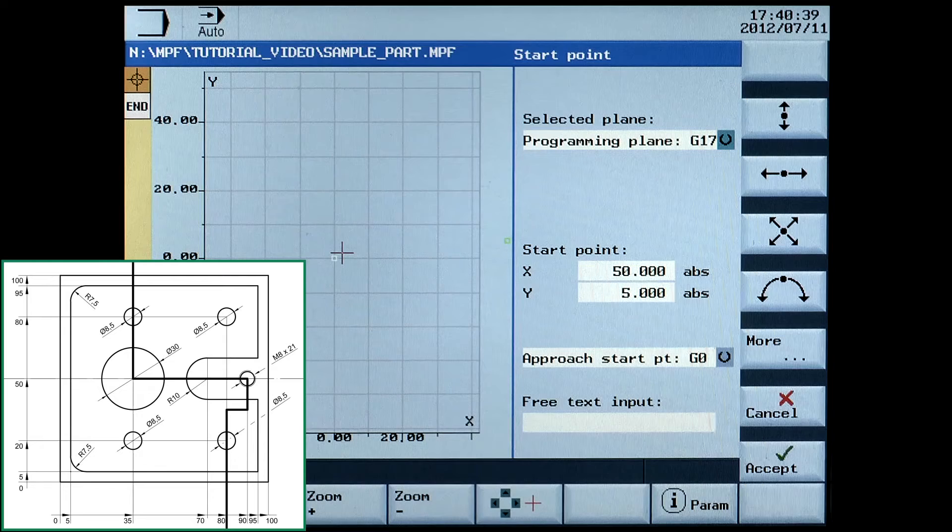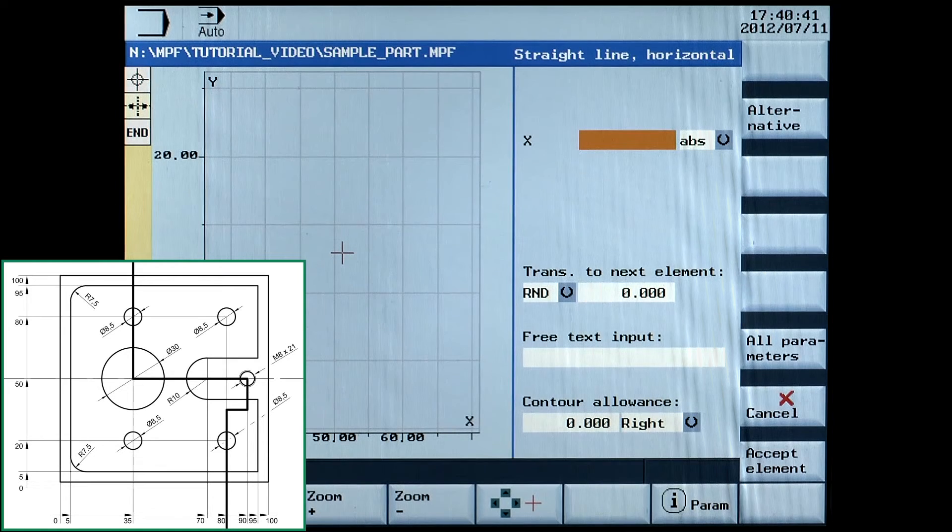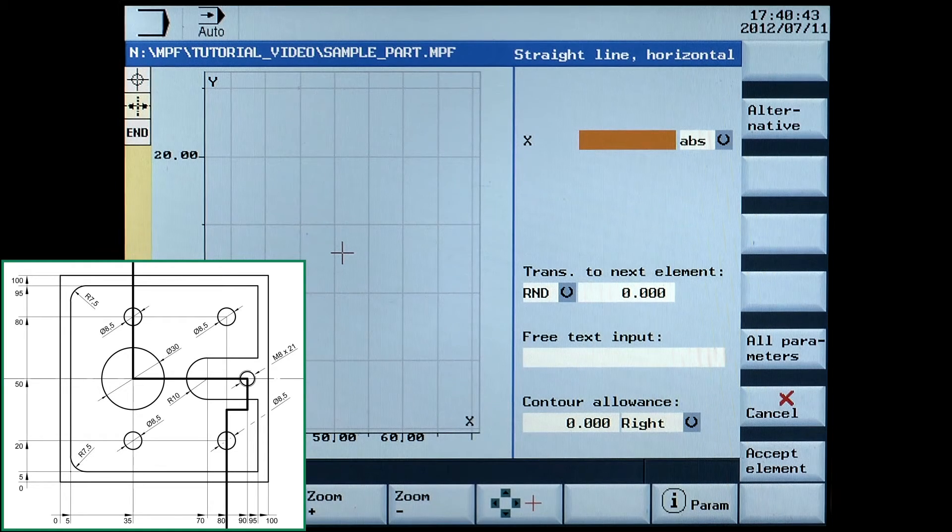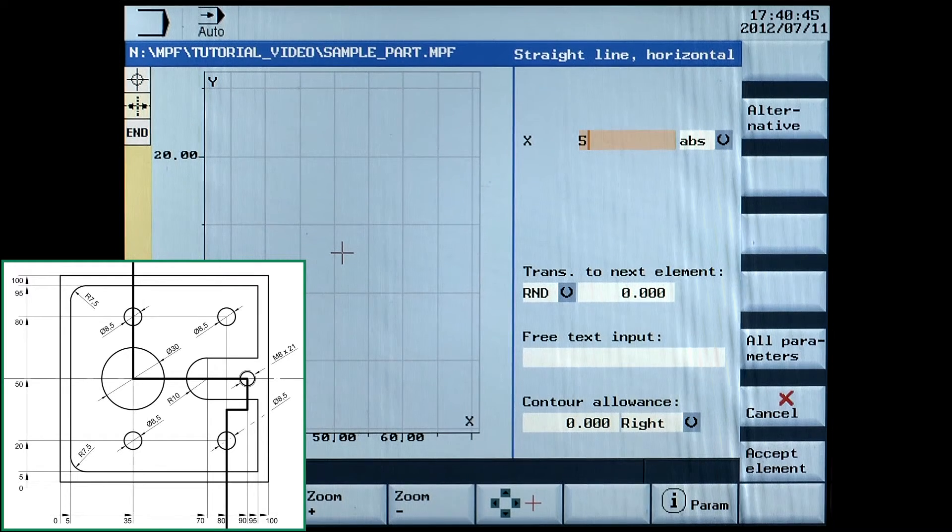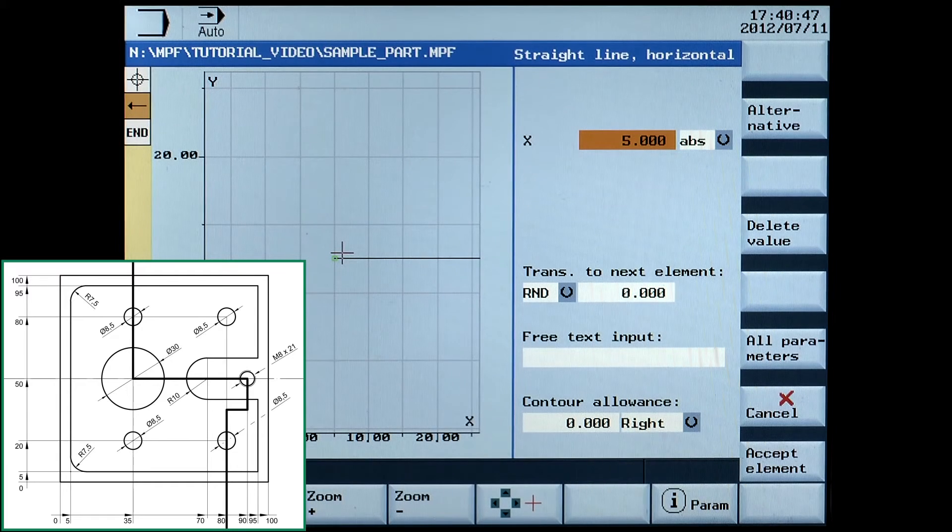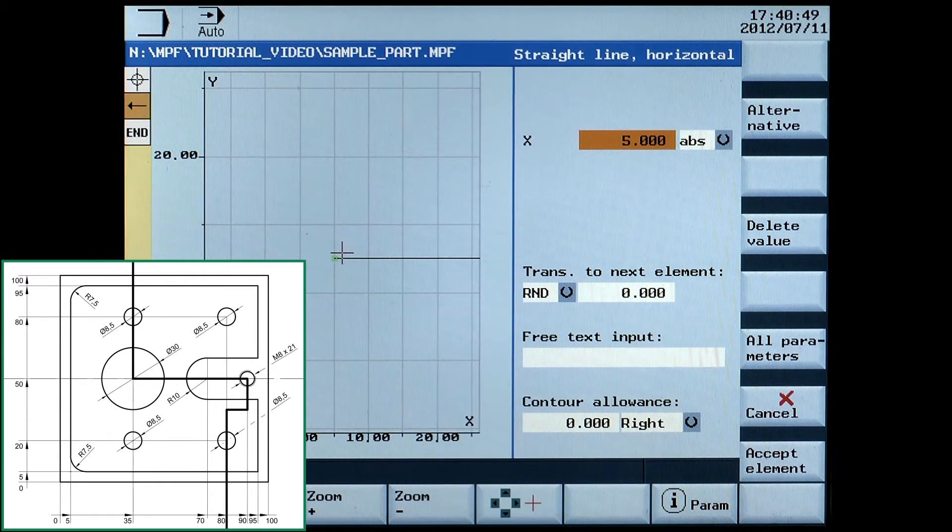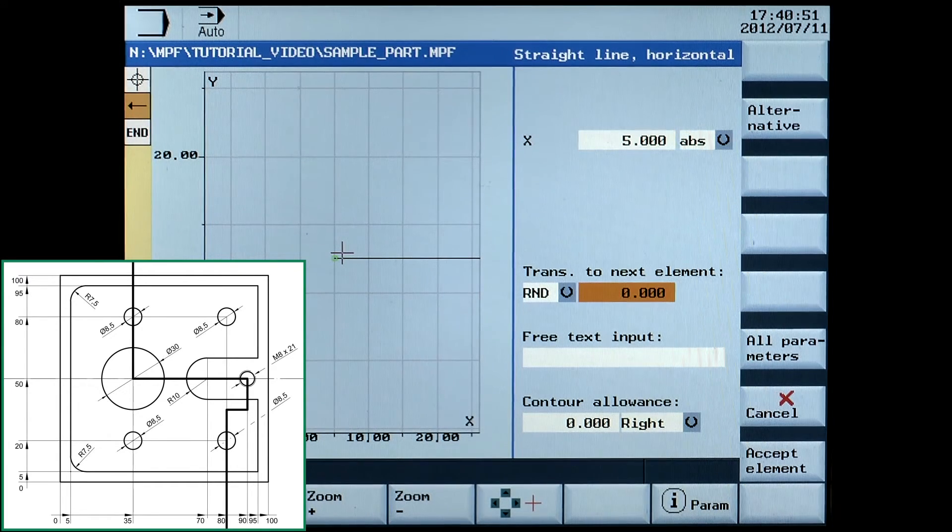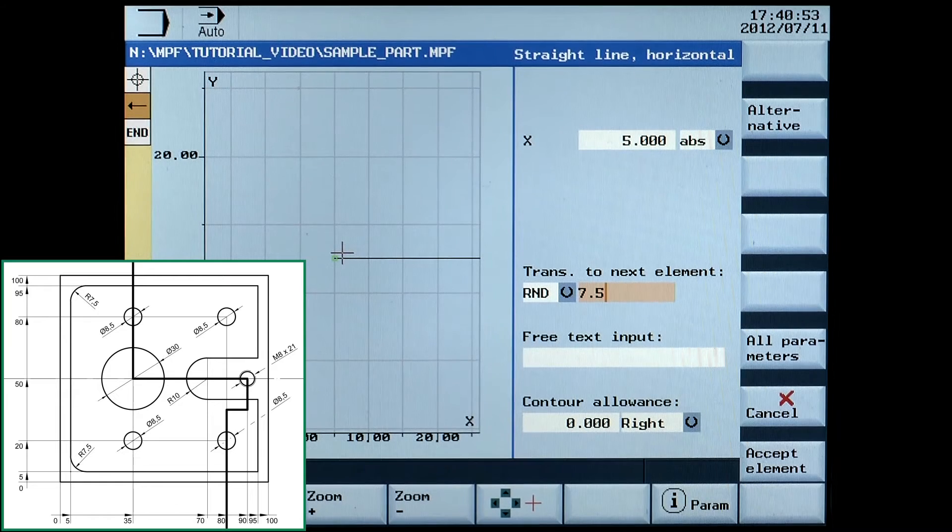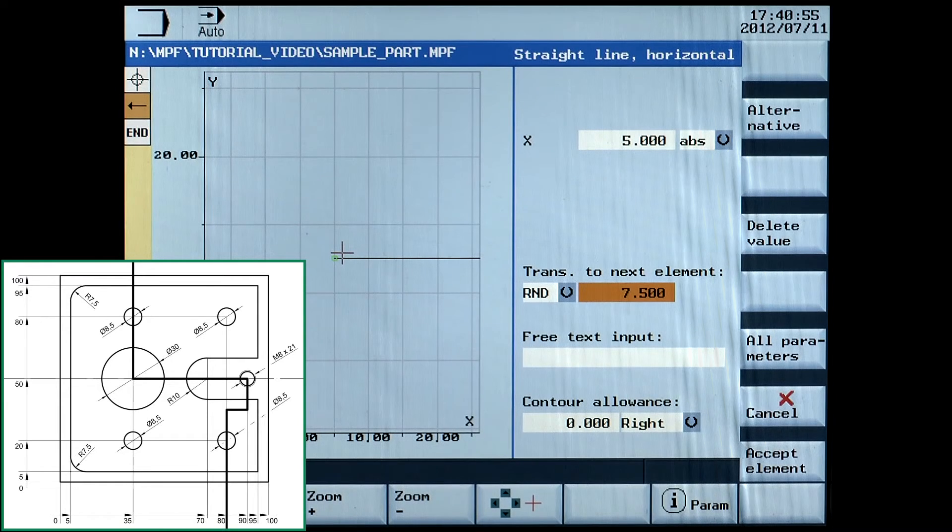Next is a horizontal line. Enter X5 absolute. Transition to next element, radius of 7.5. Accept element.